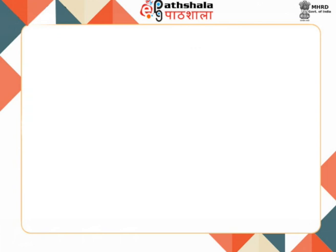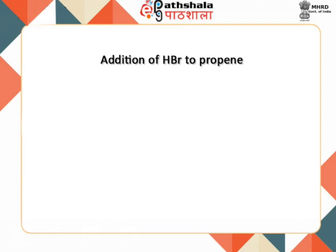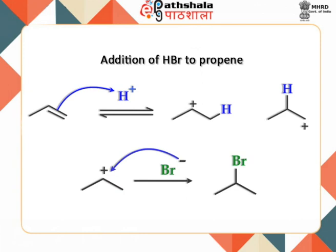One such reaction involving a carbocation intermediate is the addition of hydrogen bromide to propene. This product forms according to Markovnikov's rule. It proceeds with the formation of a more stable secondary carbocation, which is further attacked by a bromide ion acting as a nucleophile.